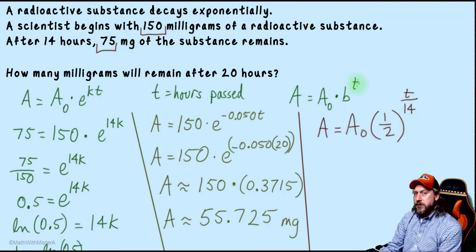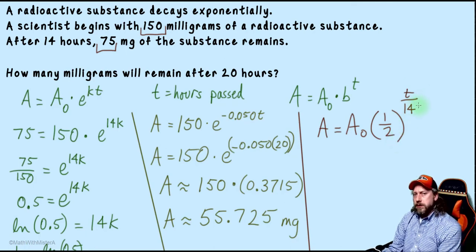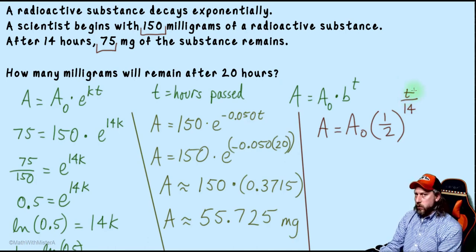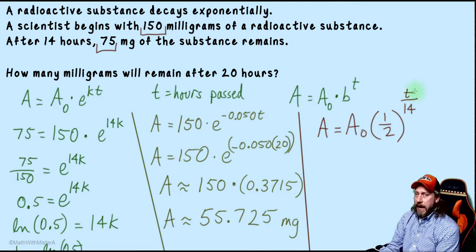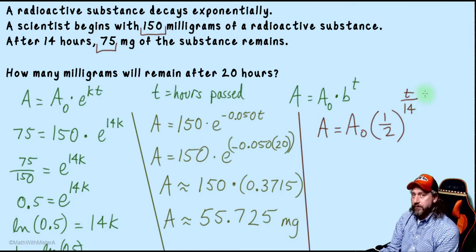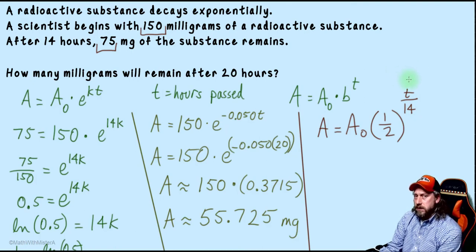So knowing that after 14 hours it's cut in half, I have enough information to create this model. Our base would be one-half, and the exponent, which tells us how frequently we do that multiplication of cutting it in half, is showing that the number of hours is out of 14, because we don't want to actually have it cut in half until hour 14. So after seven hours, we're only halfway there. Our exponent when t is seven would be one-half. So after one hour, we're only one-fourteenth of the way toward cutting in half. After two hours, two-fourteenths. So our variable t, the number of hours that passes, is in this fraction divided by 14.